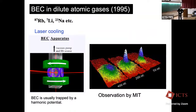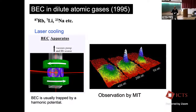BEC in dilute atomic gases was realized in 1995 using optical laser cooling techniques. The point is this BEC is focused and localized at some point, at the focus of the laser. BEC is usually trapped by a harmonic potential. This is a famous observation by MIT using time-of-flight. The temperature is reduced; below the critical temperature, the BEC condensate grows.